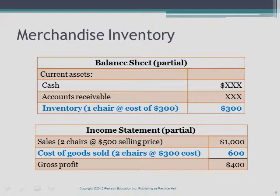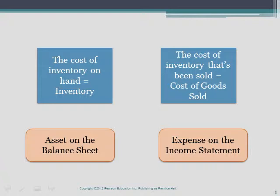At the end of the period, we can see from the partial balance sheet that we have an inventory balance of $300. From the partial income statement, we see sales generated from selling two chairs at $500, and the cost of goods sold for those two chairs at $300 apiece, giving us a gross profit of $400. This illustrates how we identify inventory, the asset, from cost of goods sold, the expense.